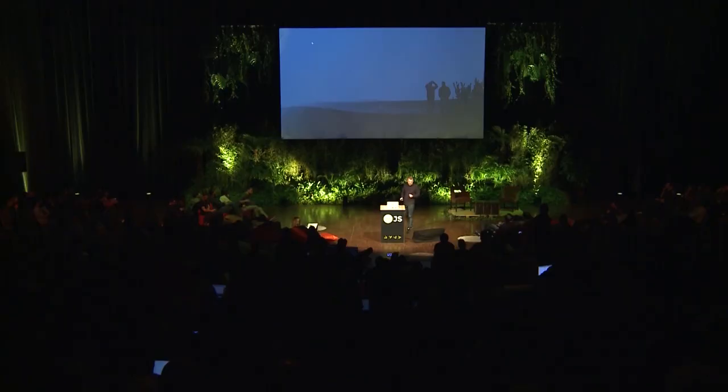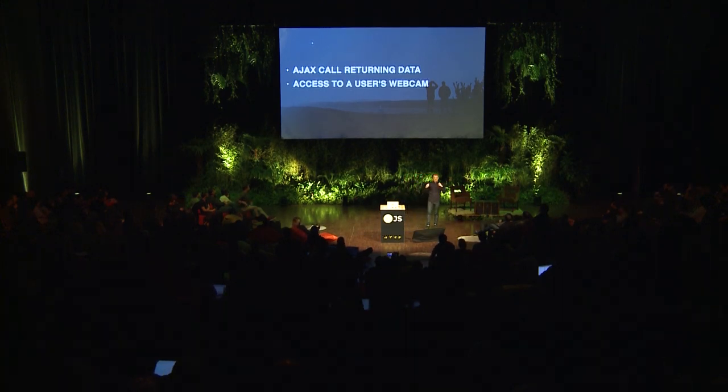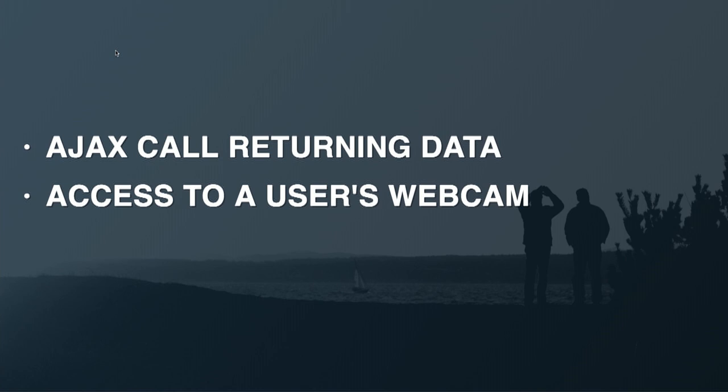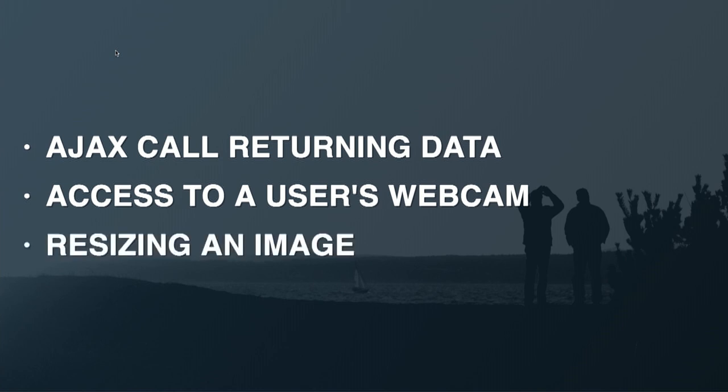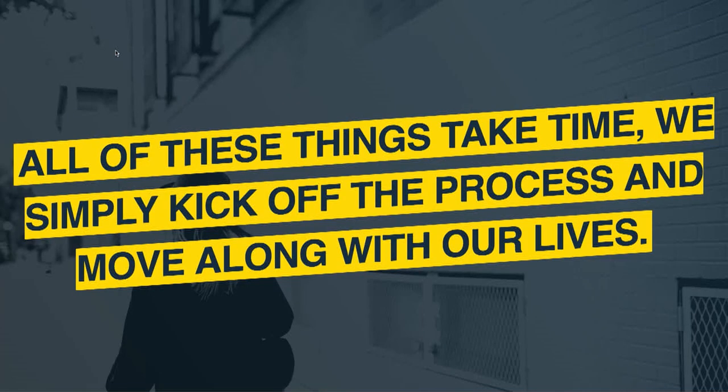I'm going to do a quick review through promises just because this is the foundation of async/await. Promises in JavaScript are sort of like an IOU for something that's going to happen at some point in the future. This could be an Ajax call returning data, this could be accessing a user's webcam once they hit the allow button, it could be resizing an image. All of these things take time, and with promises we simply kick off the process and then move along with our lives, only coming back when we need to deal with the data.